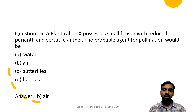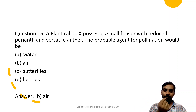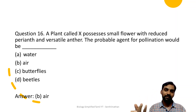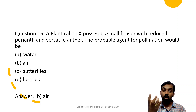A plant called X possesses small flowers with reduced perianth and versatile anthers. The probable agent for pollination would be wind. Wind pollination adaptations include small flowers, reduced perianth, and versatile anthers. In contrast, insect pollination - by butterflies or beetles - involves attractive perianth, large-sized flowers, and nectar.